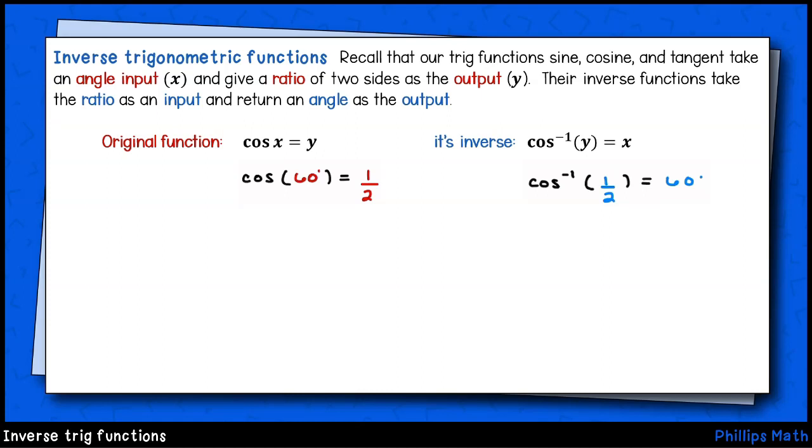From part one of this lesson, we saw that inverse functions swap the domain or inputs and the range or outputs. For our trig functions, that means that inverse sine, cosine, and tangent functions will take a ratio as an input and return back to us the angle measure as an output.